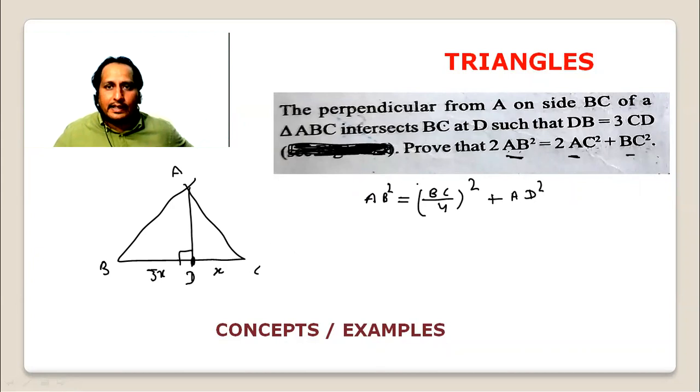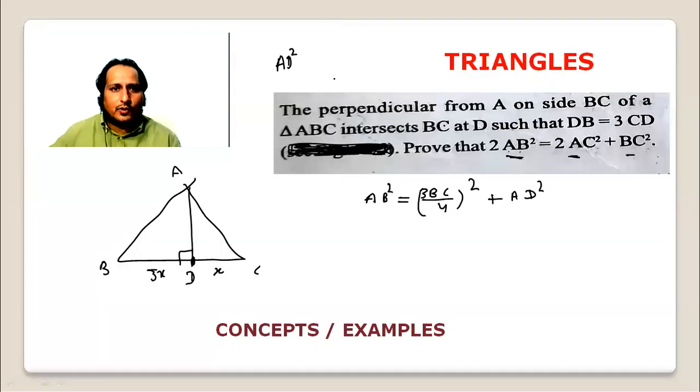This is 3 times, 3 times BC by 4. This is 3BC by 4. Now AD² - AD² is how much? BC by 4. AD² value is equal to BC by 4.